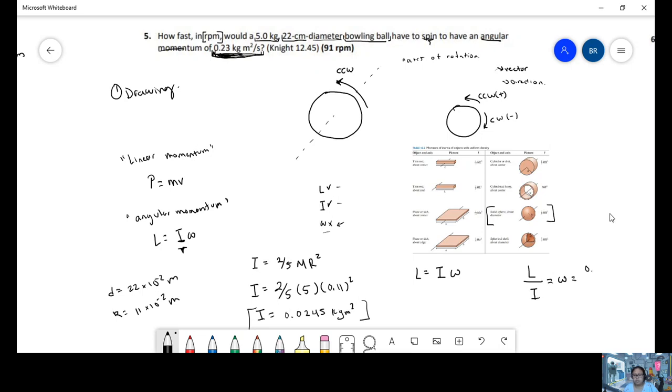We have a momentum of 0.23 and inertia of 0.0245. So we have an angular speed of 9.50 radians per second.